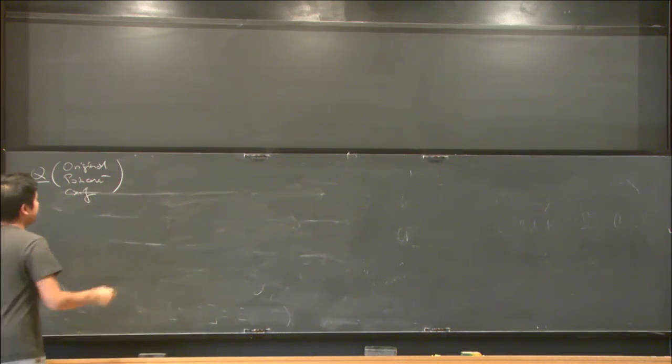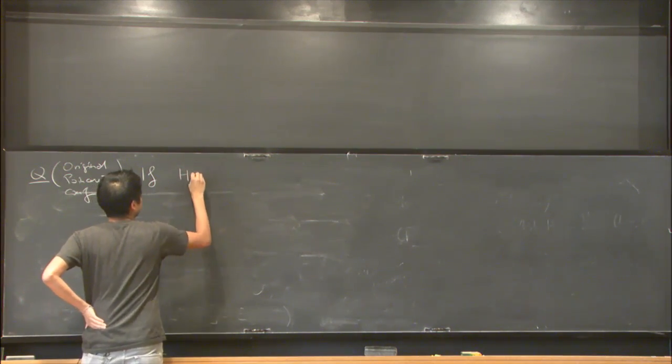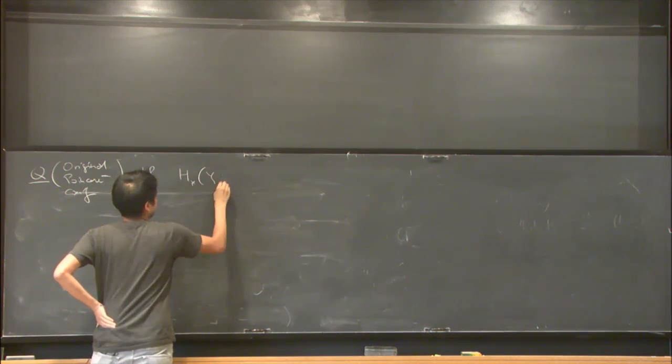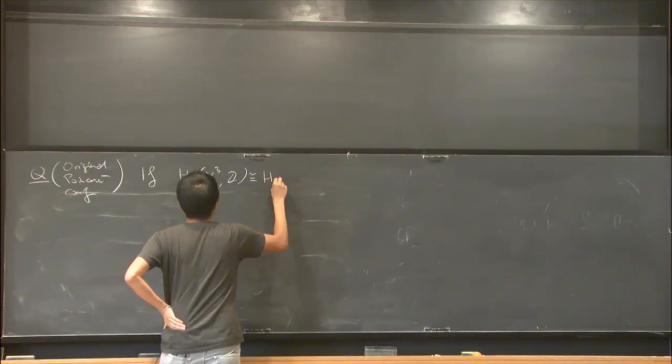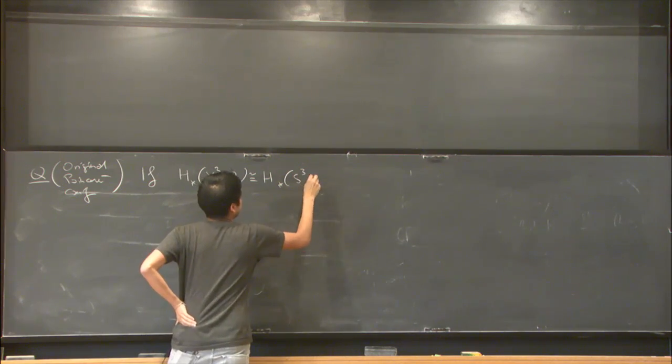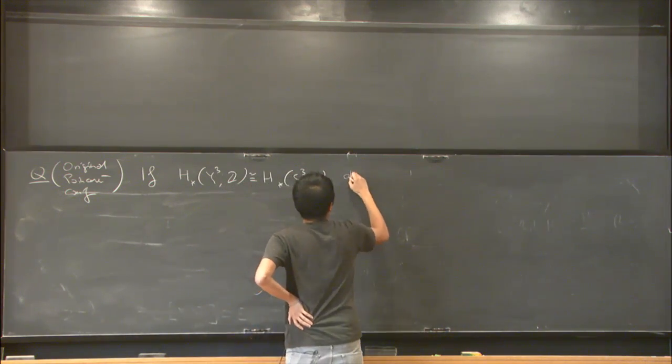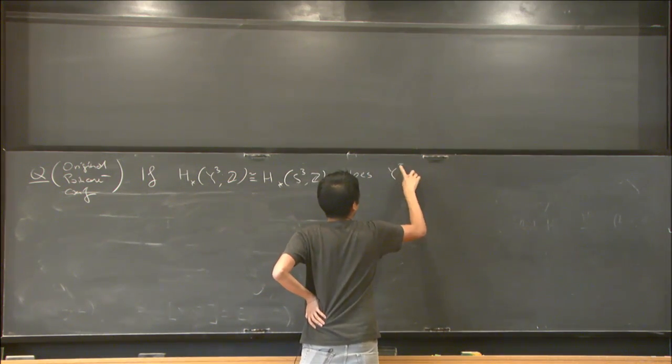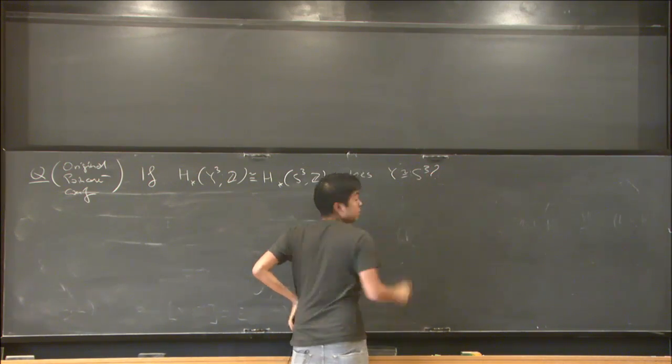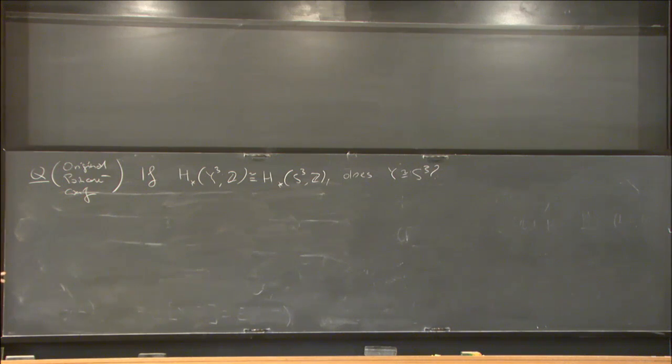Poincaré asked: suppose you have a 3-manifold such that the homology with Z coefficients is the same as the homology of S³. Is it necessarily that Y is S³?